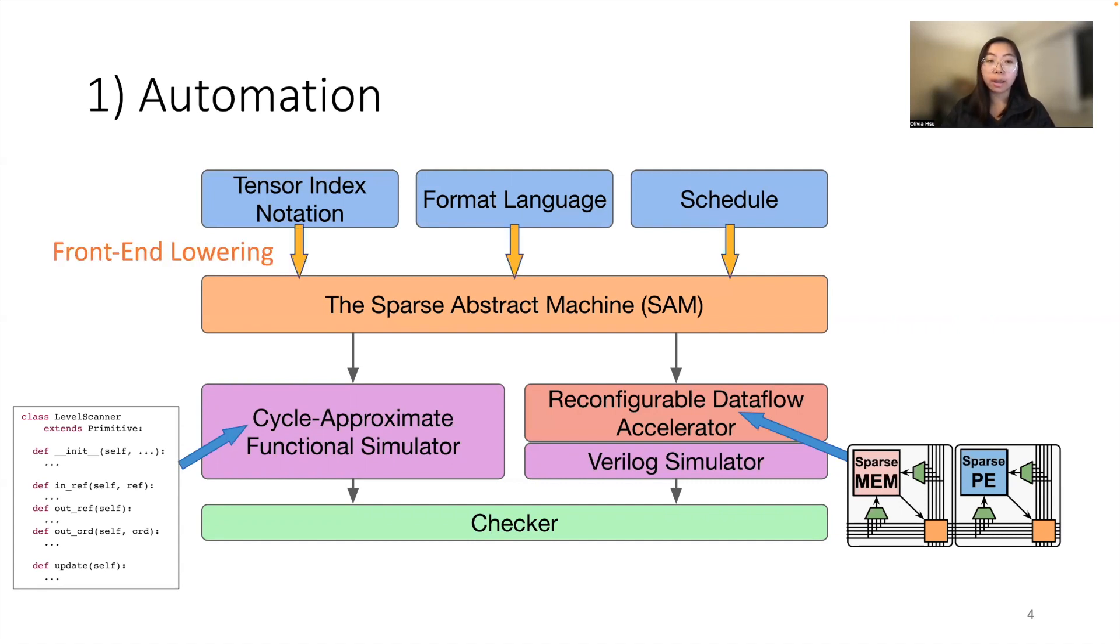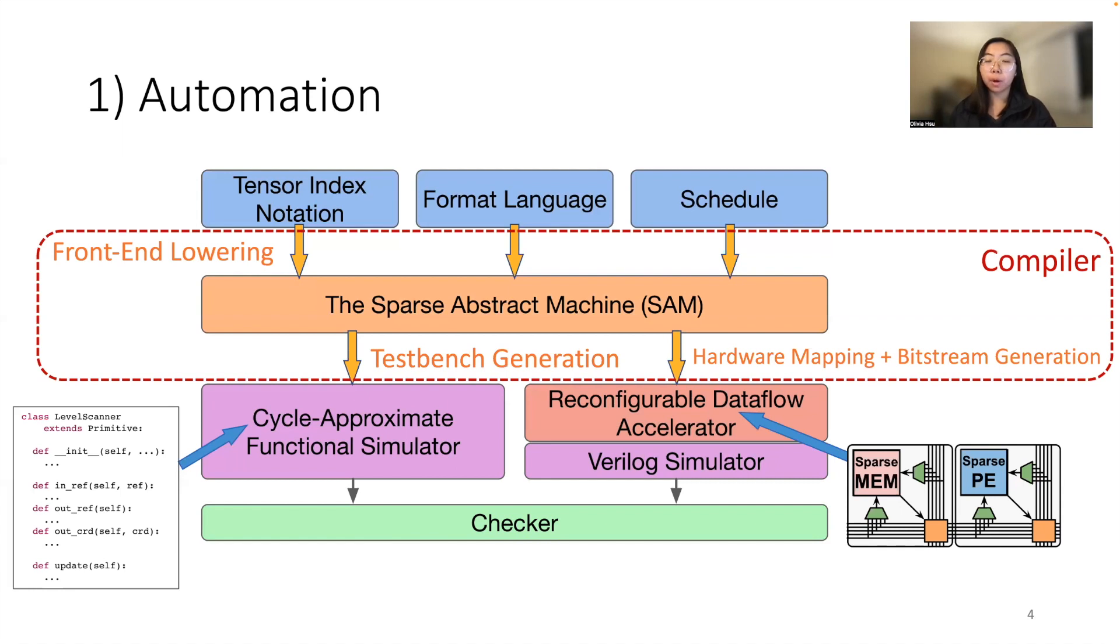In detail, that means our front end compilation from high level languages to our sparse abstract machine is automated. We get automated test bench generation and we automatically get the hardware mapping and bitstream generation for our CGRA. These three components make up our SAM compiler.